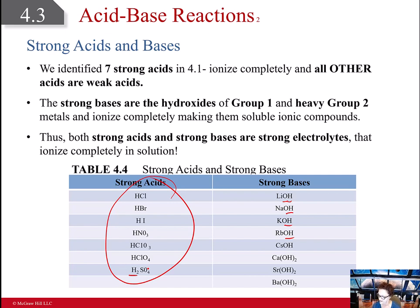The hydroxides at the end for the strong base are in group one and then the heavy group two: calcium, strontium, and barium. Those are going to be your strong bases, and so if they're not on this list, you can assume that they are not strong, therefore they are weak.